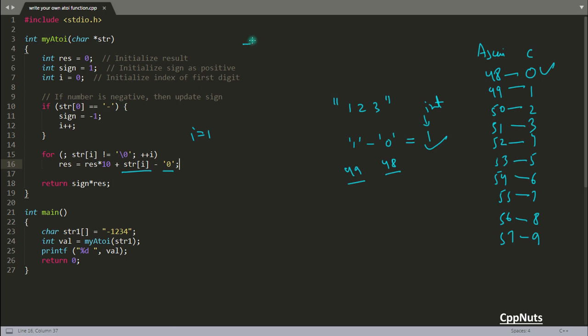Initially your result is 0. 0 times 10 plus str[i], which is '1' minus '0', will be 0, so your result will be 1 in the first case. Then we will increment i and go back inside this loop. Now we are pointing at '2', so it is going to be 1 times 10 plus 2.